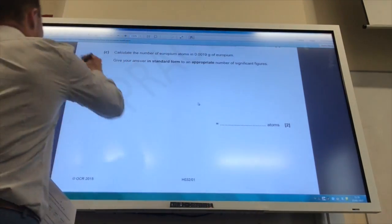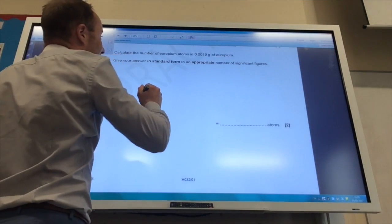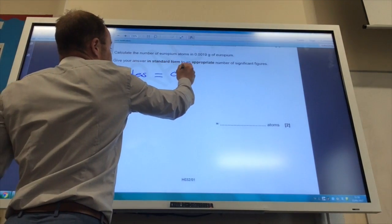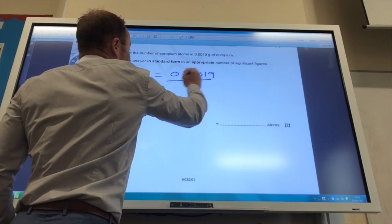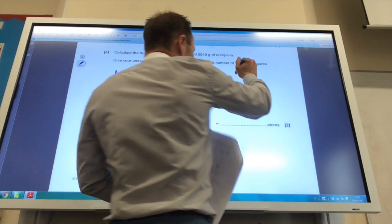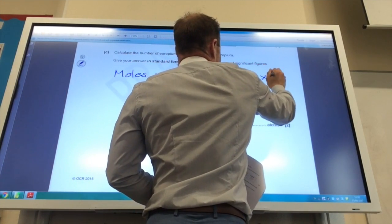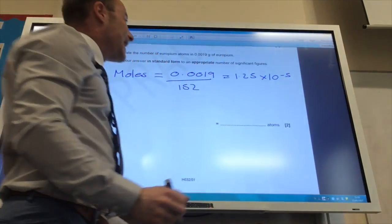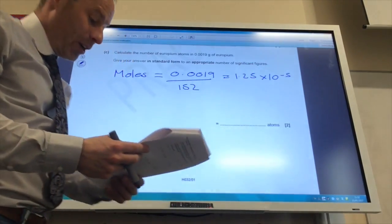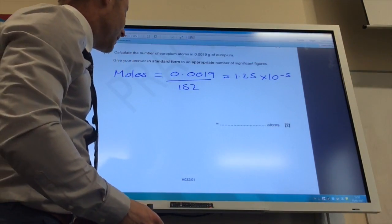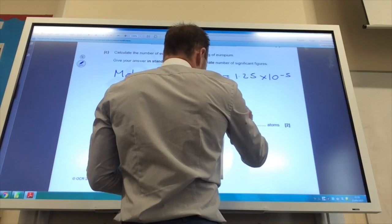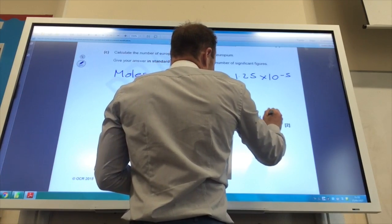Right, so it now wants me to calculate the number of atoms in 0.0019 grams of europium. So first of all, work out your moles of europium, which is 0.0019 divided by the relative atomic mass of europium, which is 152. That gives you 1.25 times 10 to the minus 5 moles. Then to get the number of atoms, you times this number by Avogadro's constant, which is 6.2 times 10 to the 23, and that will give you 7.5 times 10 to the 18 atoms.